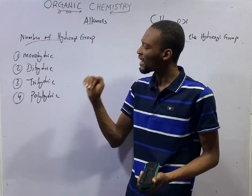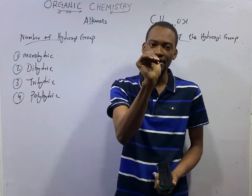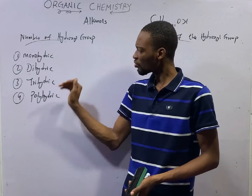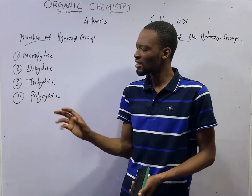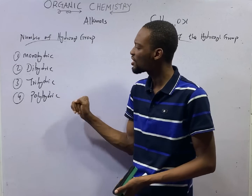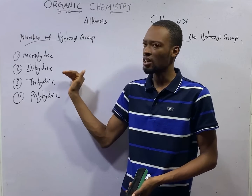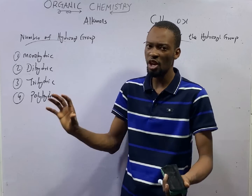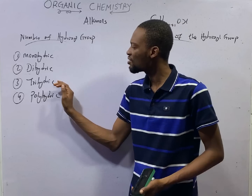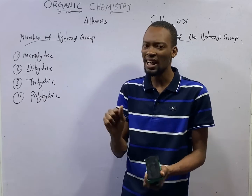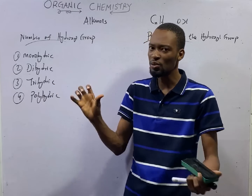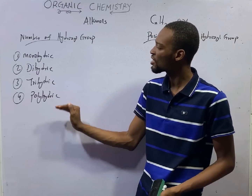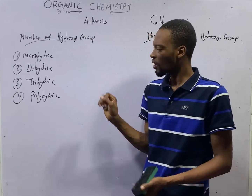If an alcohol has only one OH, it is simply a monohydric alcohol. If an alcohol has two OH, it is a dihydric alcohol. If an alcohol has three OH in the structure, it is a trihydric alcohol. And when an alcohol has more than three OH groups in the molecule, it is a polyhydric alcohol.